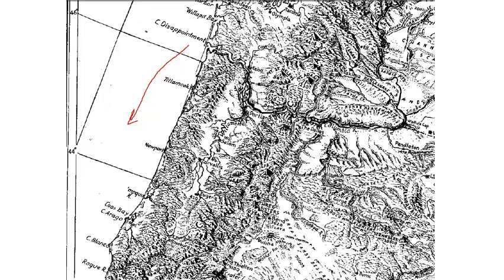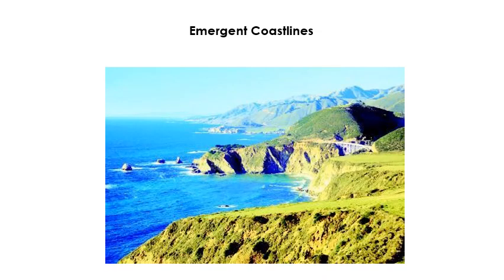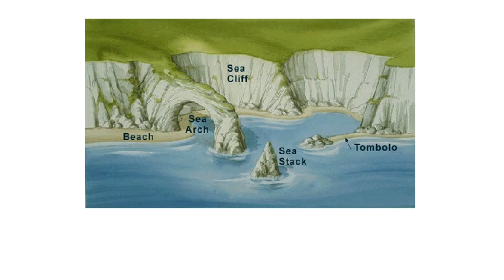An emergent coastline looks like this — the coast of California with cliffs going right up to the ocean. Out here we see little sea stacks, chunks of rock that have been eroded away. Emergent coastlines are areas where the land has risen up relative to sea level, or the ocean has dropped relative to the land — land emerging from the ocean. Along emergent coasts we get sea cliffs with a beach at the bottom, places where the land juts out into the ocean, sea stacks, sea arches, and sea caves.